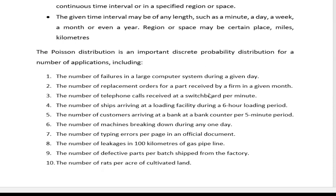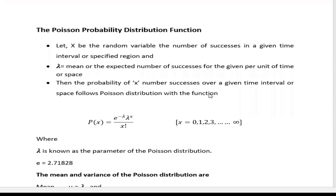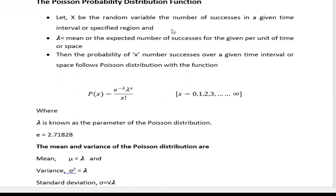Let x be the random variable — the number of successes or occurrences in a given time interval or specified region. Lambda is the expected number of successes or occurrences for that given time or space. The probability of x successes follows Poisson distribution as: P(x) = e to the power minus lambda, multiplied by lambda to the power x, divided by x factorial.